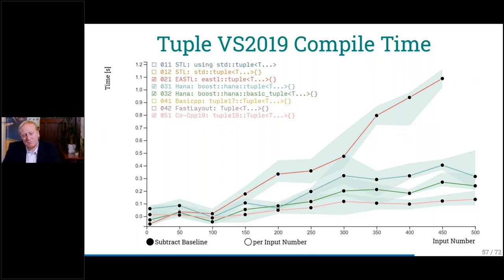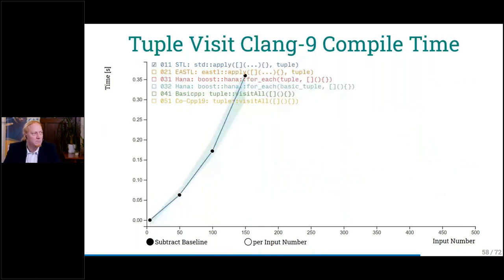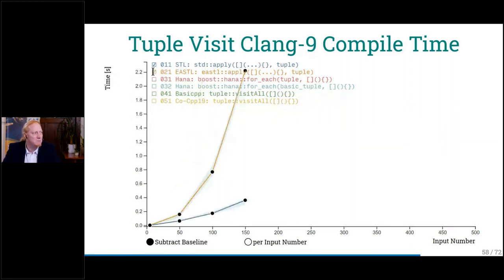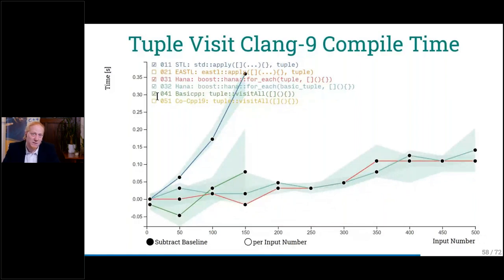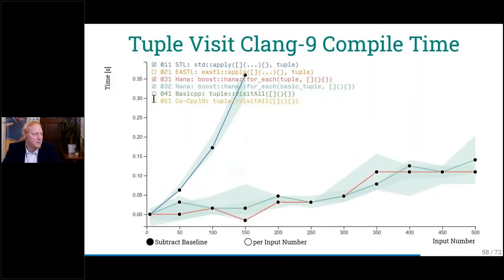Maybe it's not best to compare tuples just by instantiating a default tuple — we want to use it a bit. One version is to visit all the values in a tuple — I used a 'visit all' pattern which you can use with the STL standard `apply`. Comparing: the STL version is faster than the standard apply version. HANA goes crazy — it's much faster. Basic CPP at least seems to be fast on visiting all the members. My version seems to get kind of an improvement above Boost HANA. On the Visual Studio compiler: EASTL is slower but not by much. Boost HANA again goes circles around the STL implementation. Basic CPP doesn't compare too well. But if I want to, I can beat them again.